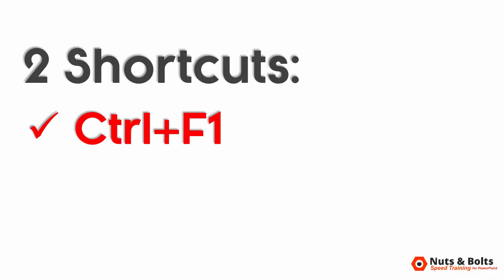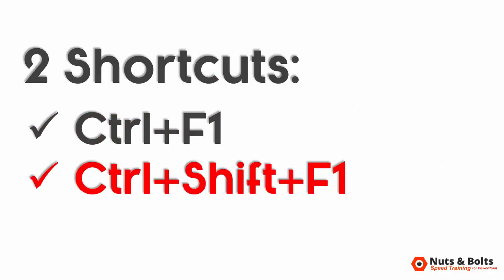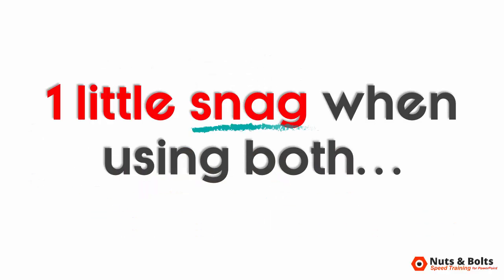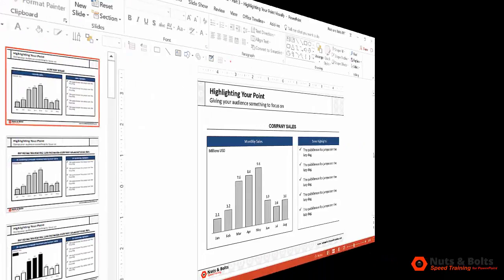The two shortcuts are Control plus F1 to collapse your ribbon, and Control plus Shift plus F1 to auto-hide your ribbon — what I'm calling distraction-free mode. There's one little snag that pops up when you use both of these shortcuts together, but I'll point that out in just a second. Let's first take a look at these.